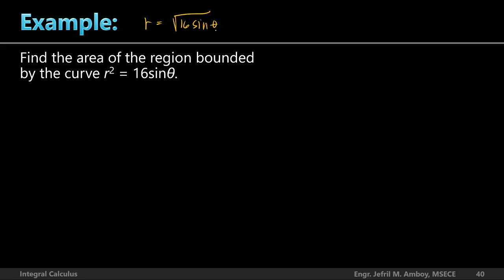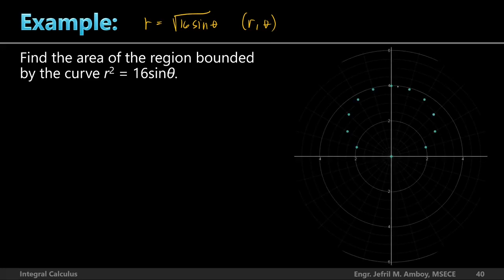For example, when theta is 15 degrees, compute r and plot the point (r, θ). Repeat the procedure for theta = 30, then 45, and so on. Until you have plenty of points which you can connect to trace the graph. If you do this from 0 up to 180 degrees, this is the plot you get — the points from 0 to 180 degrees traced from the form r = √(16 sin θ).